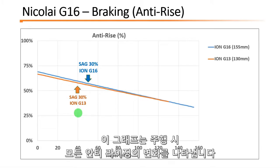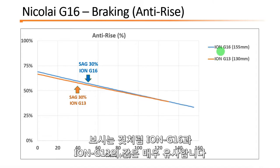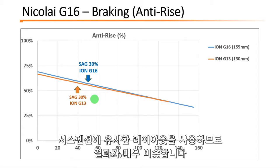This graph represents all the anti-rise changes across the travel. And as you can see, the ION G16 and G13 are very similar — they use a similar layout for the suspension so the results are very similar.